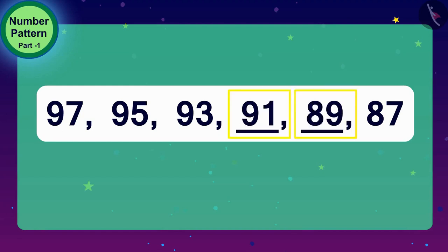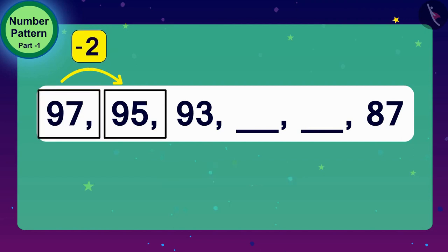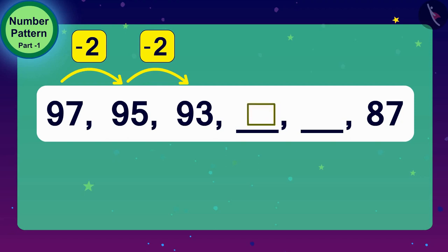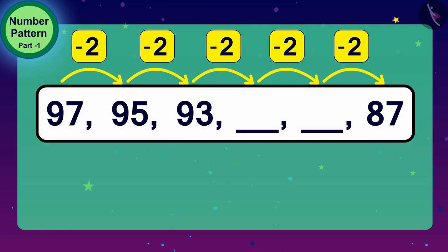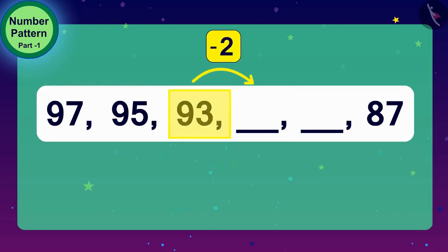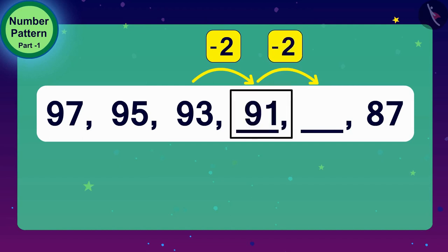Well done, children, you have got the right answer. What do we have to do to get 95 from 97 here? Yes, we have to subtract 2 from 97. And what to do to get 93 from 95? Exactly, once again subtract 2. So to get the next number in this number pattern, we need to subtract 2 from the number before it. The next number will be 2 less than 93, and then 2 less than 91.